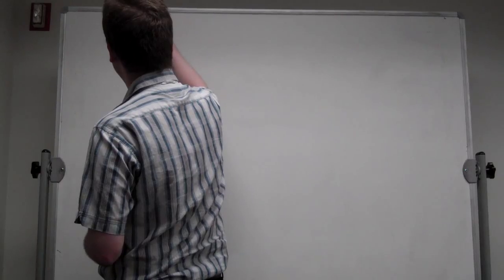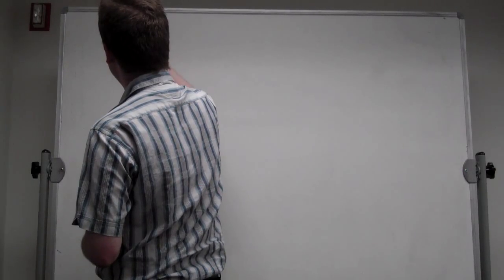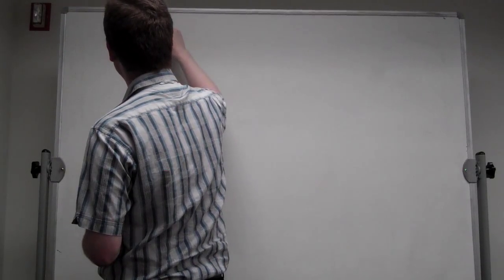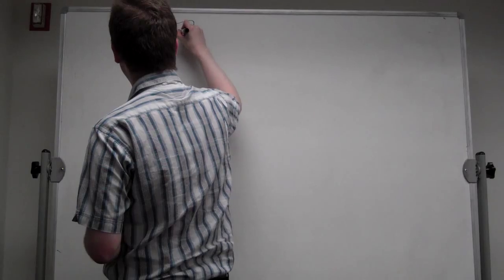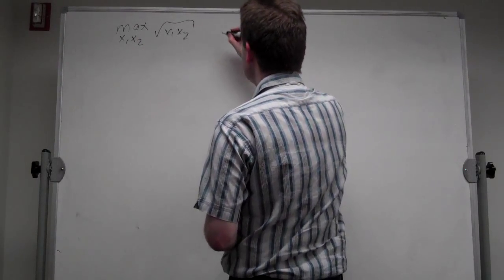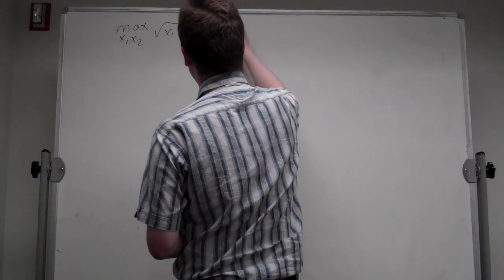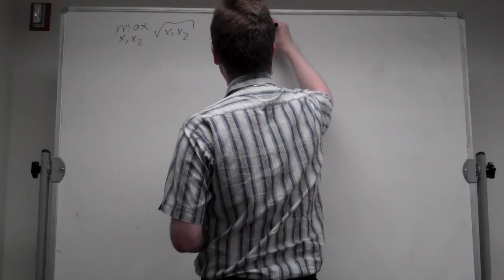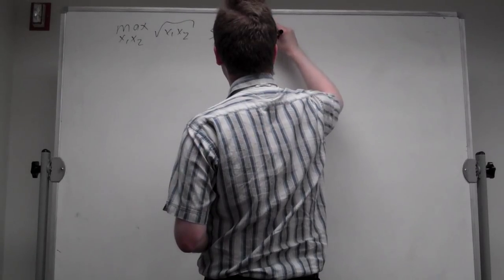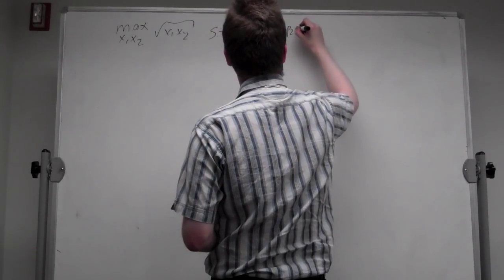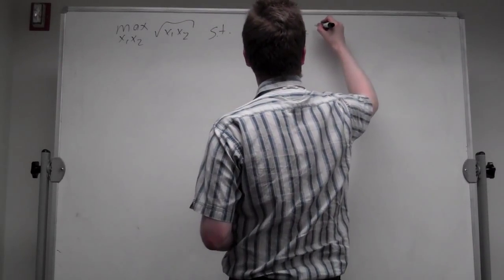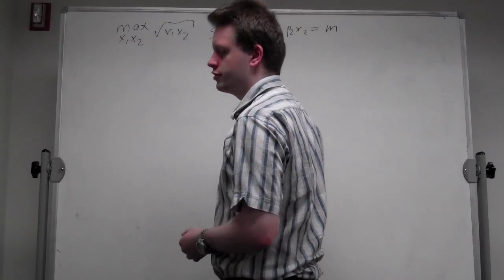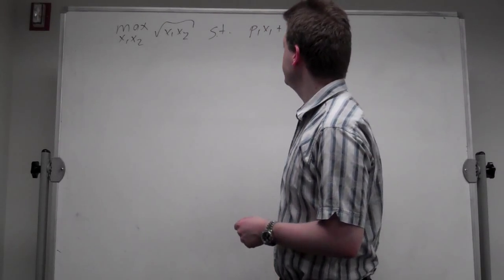Let's start with a simple maximization problem. We maximize with respect to x1 and x2 the square root of x1 and x2, such that p1*x1 plus p2*x2 equals m. So a simple consumer maximization problem.